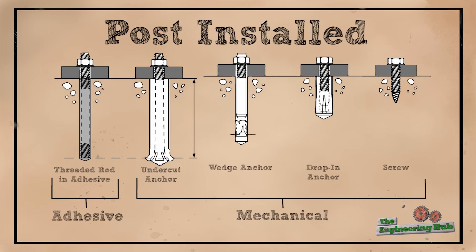Mechanical anchors have many types. Common ones are undercut, wedge, drop-in, and screw.